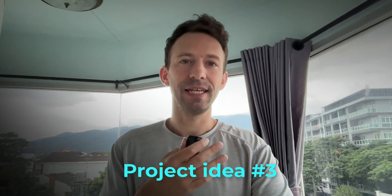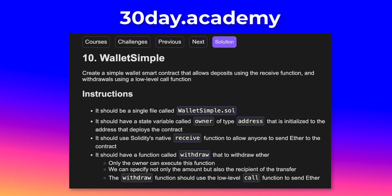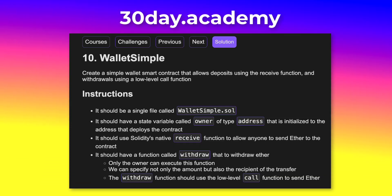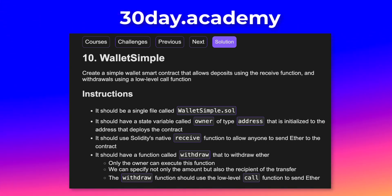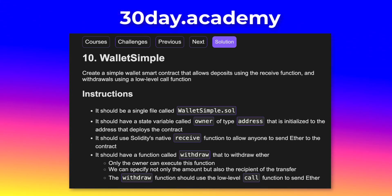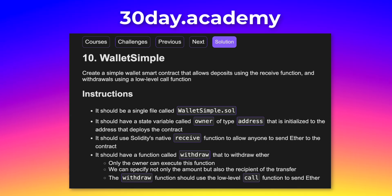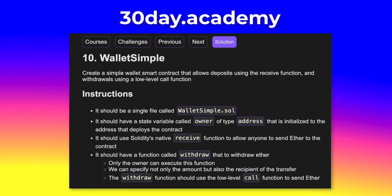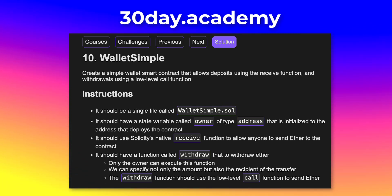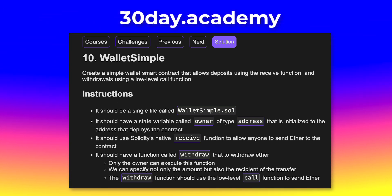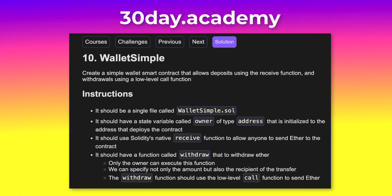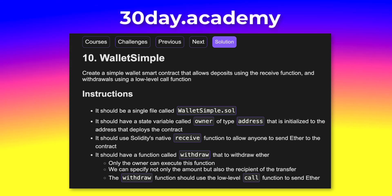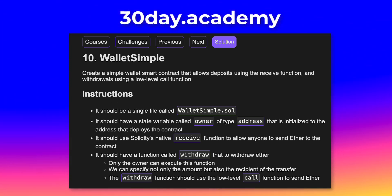The next project idea is a wallet. You will have a first function to deposit Ether and another function to withdraw Ether, but only the owner of the wallet will be able to execute this function. With this project, you will learn how to send money to a smart contract, how to send money from a smart contract to another address, and you will also learn access control, which is very important in smart contracts — a pattern we use all the time.